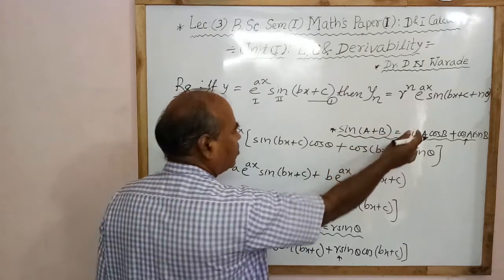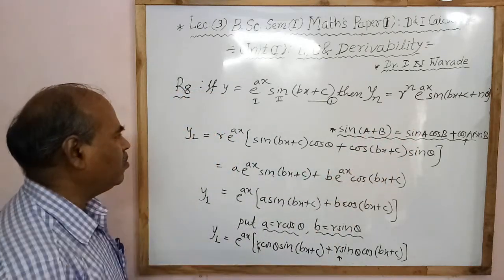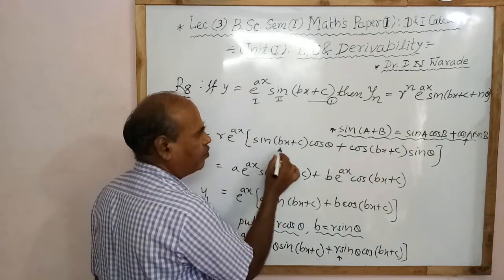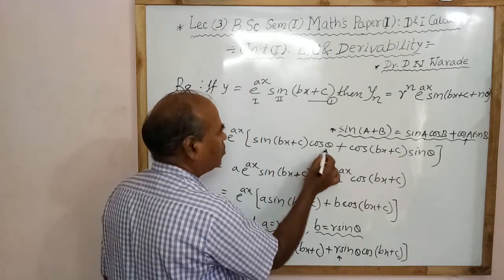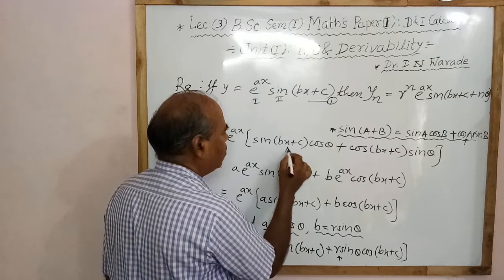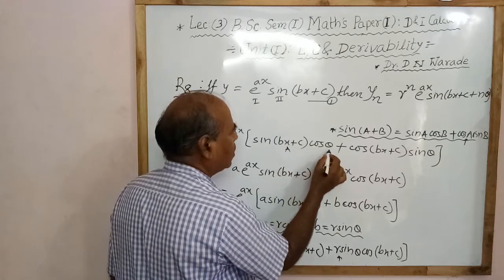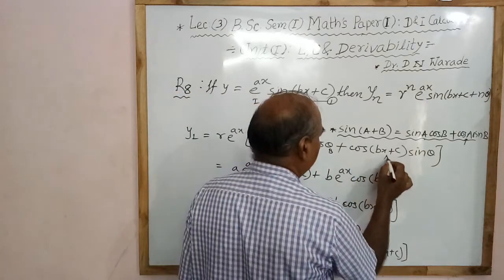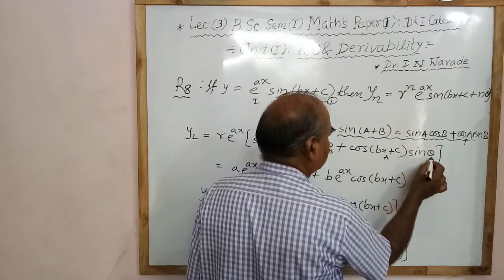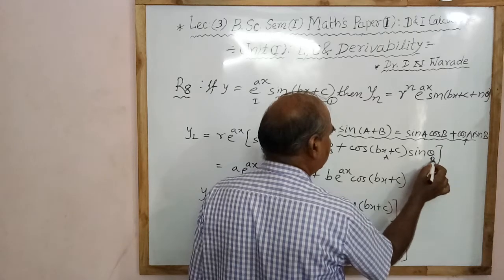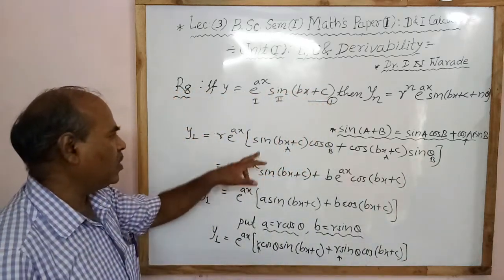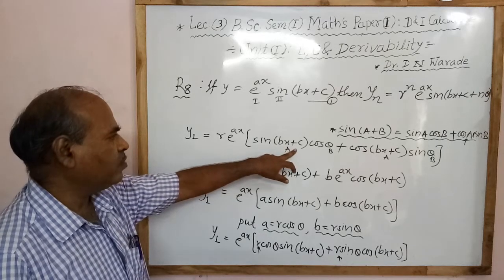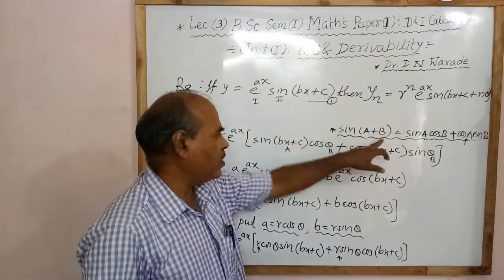Then we use the formula sine of a plus b equals sine a cos b plus cos a sin b, where a equals bx plus c and b equals theta. Therefore in this formula we have sine of a plus b, where a means bx plus c.